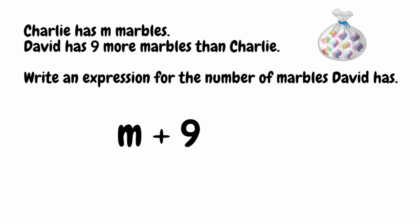This works for any value of m. So if m was equal to 10, then m plus nine would be 19, so David would still have nine more. If m was equal to 25, then the value of m plus nine would be 34, and David would still have nine more marbles than Charlie. So a useful tip: if you're not sure what to do, pick a value for the variable, follow it through with the operation needed, then put the variable back in.